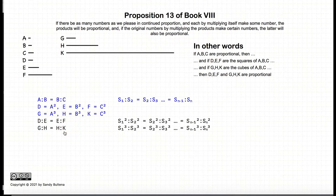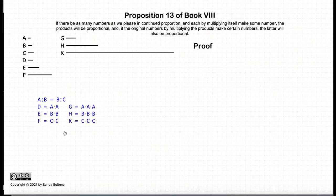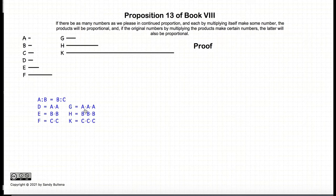So this is what this proposition is trying to prove. We start with a:b = b:c — there are our three numbers in continuous proportion — and we have numbers d, e, and f that are a², b², and c², and g, h, and k, which are a³, b³, and c³.